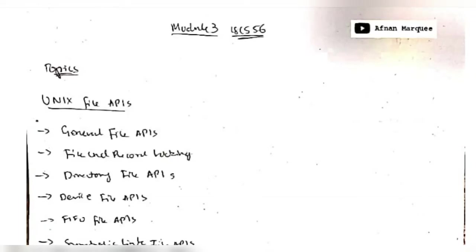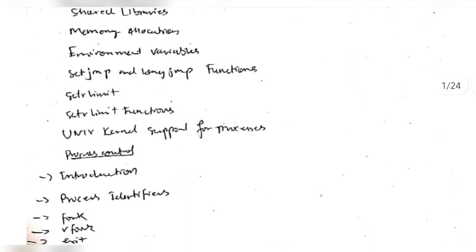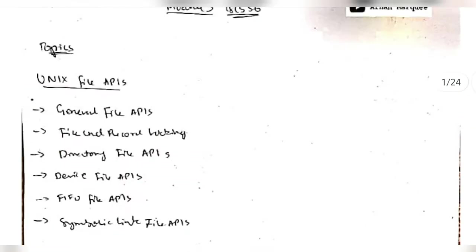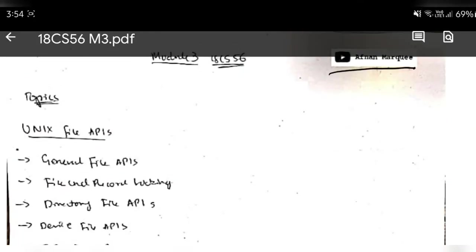Hello everyone. Today in this video we will be discussing the third module of Unix. In this module we have the main topic which is API, and after that we have the process and the process control which is pretty easy. I will be discussing both of these topics, so let's get started. If you like this video, hit the like button and do not forget to subscribe to my channel.